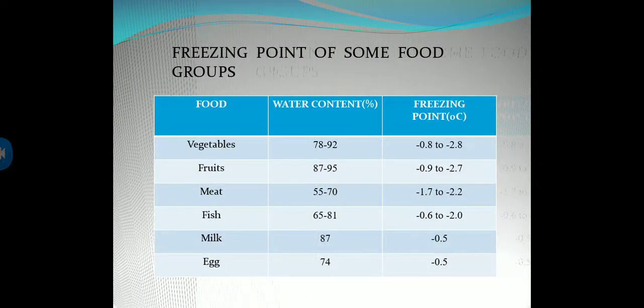The freezing points of some foods: vegetables contain 78 to 92% water, freezing point minus 0.82 to minus 2.8°C. Fruits contain 87 to 95% water, freezing point minus 0.92 to minus 2.7°C. Meat contains 55 to 70% water, freezing point minus 1.72 to minus 2.2°C. Fish contains 65 to 81% water, freezing point minus 0.62 to minus 2.2°C. Milk contains 87% water, freezing point minus 0.5°C. Eggs contain 74% water, freezing point minus 0.5°C.